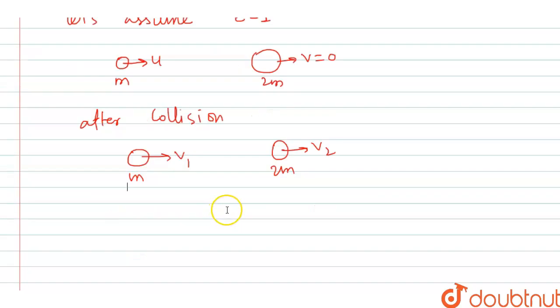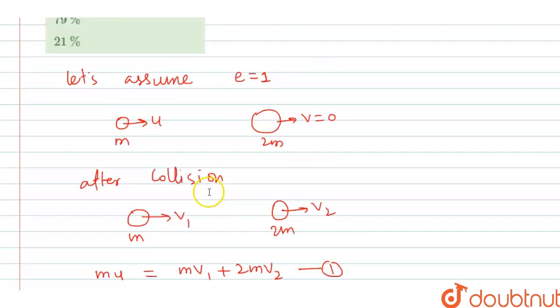Now we will apply momentum conservation. We can apply momentum conservation, right. So first we will get mu is equal to mv1 plus 2mv2. Let's just call it equation 1. If we solve it further, we will get u is equal to v1 plus 2v2.